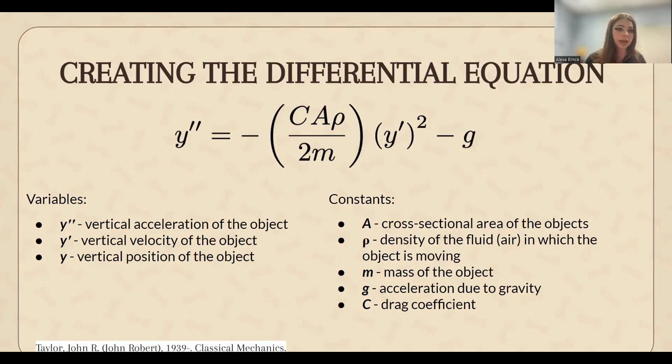So if you look at the variables here, we have the second derivative of y, which is vertical acceleration, first derivative, which is vertical velocity of the object, and then the vertical position of the object. And then our constants, we have A representing the cross-sectional area of the objects, ρ the density of fluid in which the object is moving, m the mass of the object, g the acceleration due to gravity, and C the drag coefficient. And those are the factors that go into this differential equation.